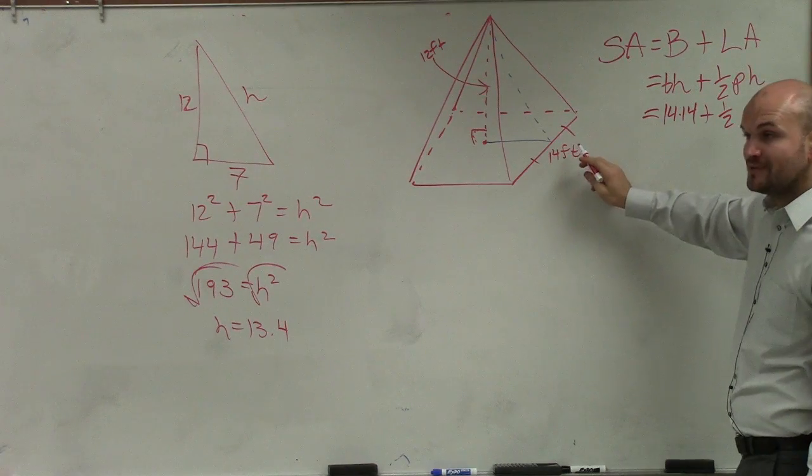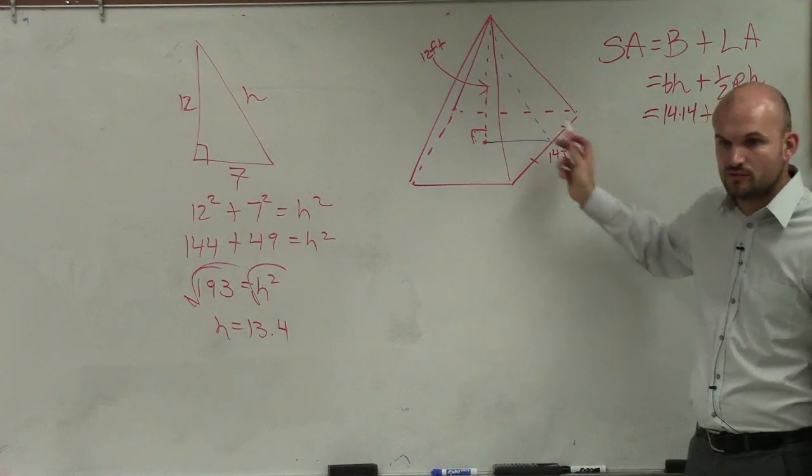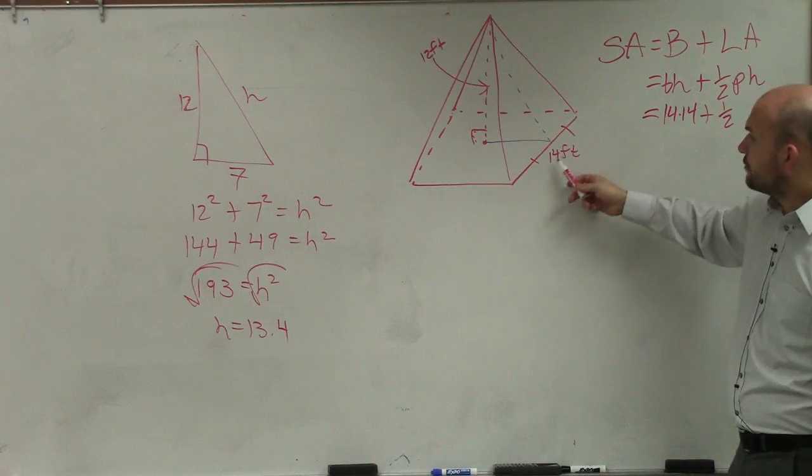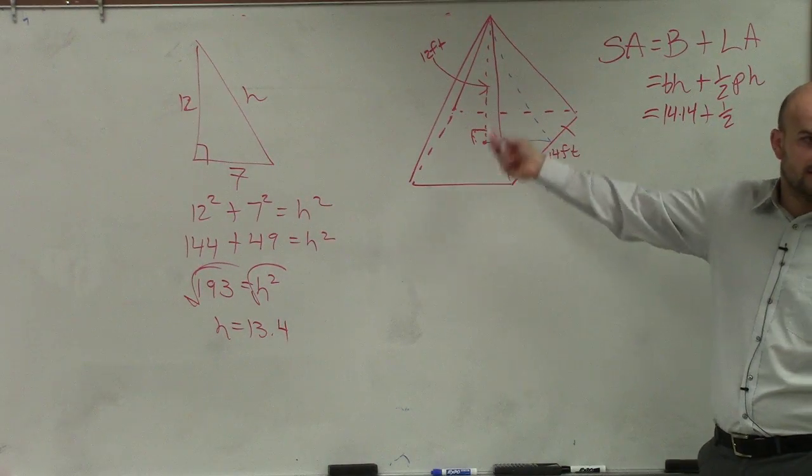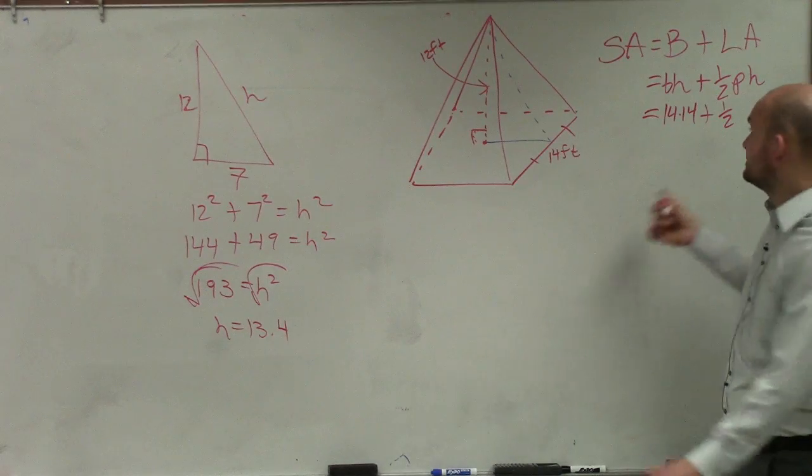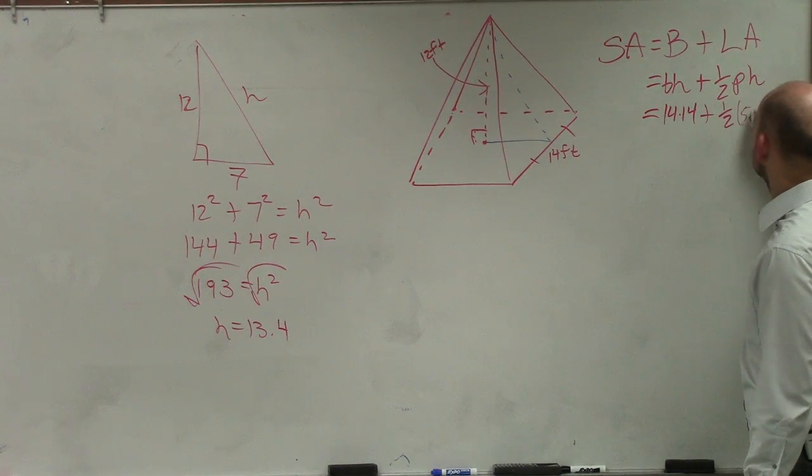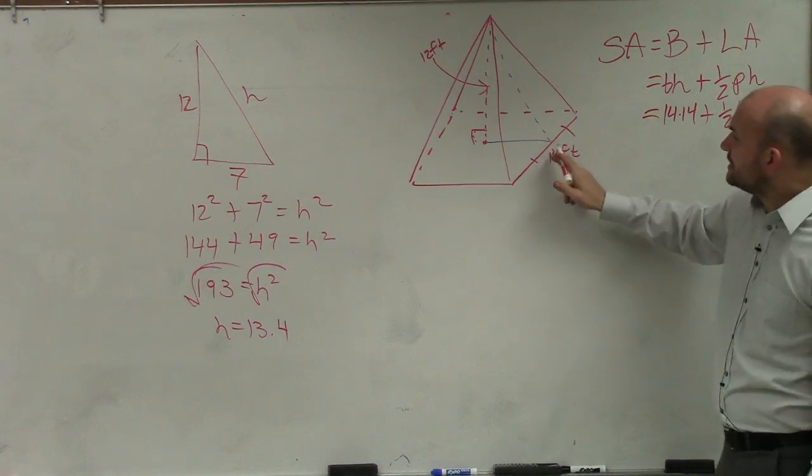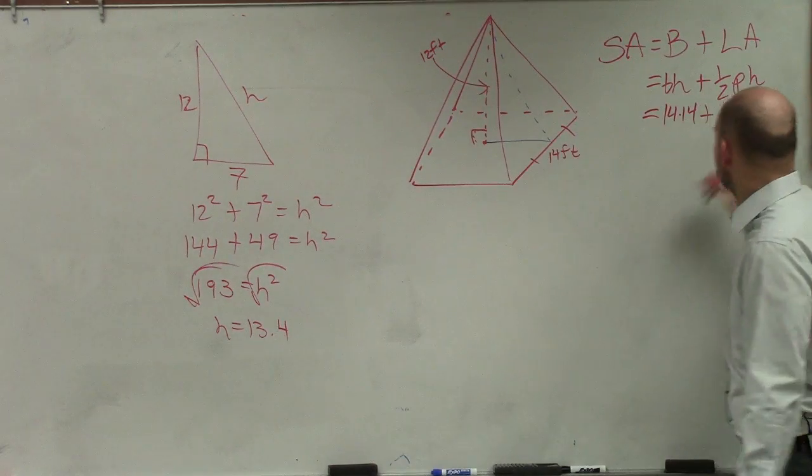Perimeter, p represents perimeter. What is the perimeter of this square on the base? 14 plus 14 is 28 plus 14 plus 14 is 56. And then times the height, which we determined was 13.4.